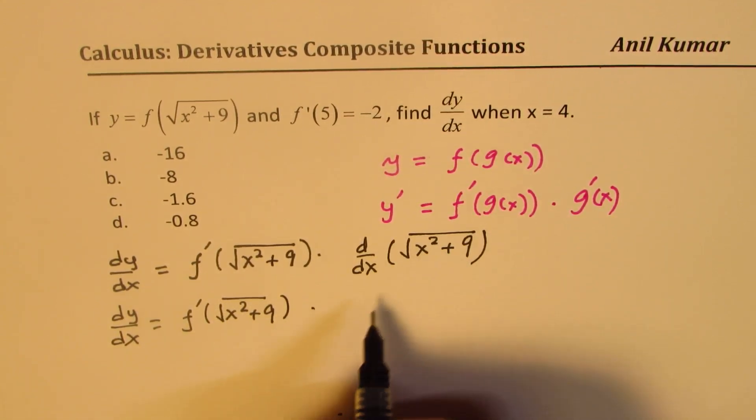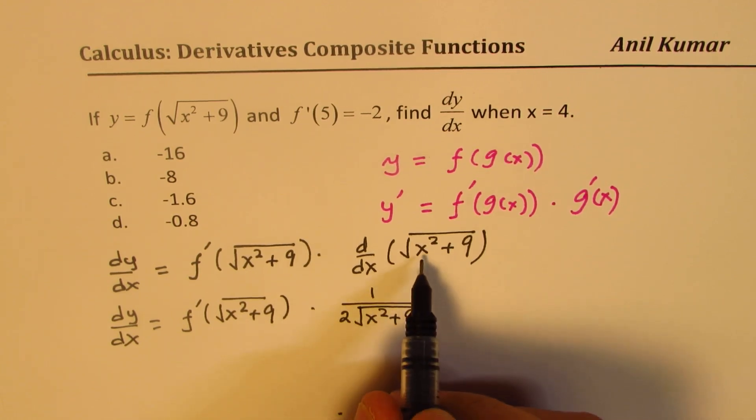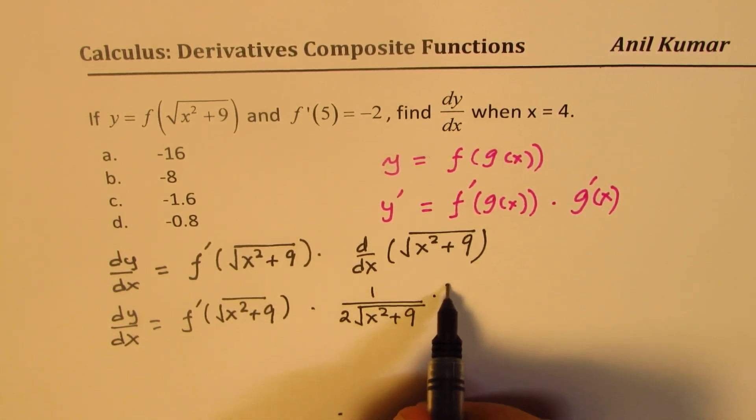So we get dy dx equals f dash of square root of x squared plus 9. Derivative of this function is 1 over 2, that is half of this, square root of x squared plus 9 times the derivative of inside function, which is 2x.